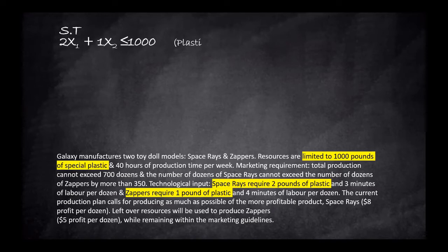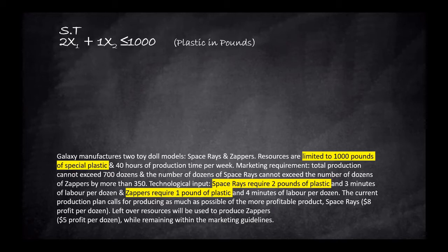Subject to constraints, here is the first one: two pounds of plastic multiplied by how many dozens of space rays, so that's 2x1, plus one pound of plastic multiplied by how many dozens of zappers we produce — and these two together will add up to be less than or equal to the availability of 1,000 pounds of plastic.